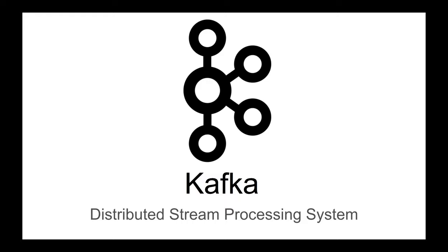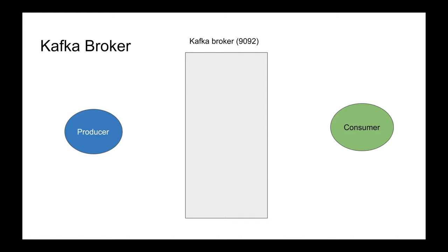The first component of Kafka is what we call the Kafka server or the Kafka broker. That Kafka broker is basically the first server that users interact with. And since it's a server, it's listening to some TCP connection to accept connections.